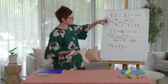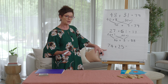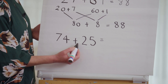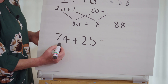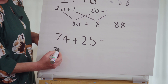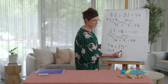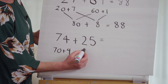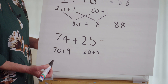Well done! Let's try one more — and I think you could probably do this one without me. I've got some examples ready for you to do in your learning books, so let's finish this one off together. 74 plus 25. The first thing we do is partition both numbers. 74 is 70 plus 4. And 25 is 20 plus 5.